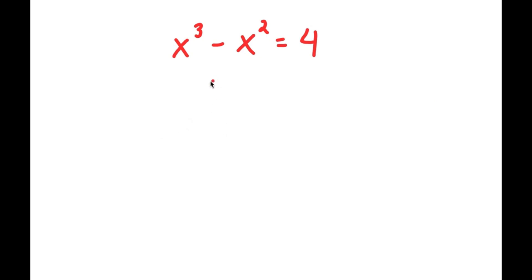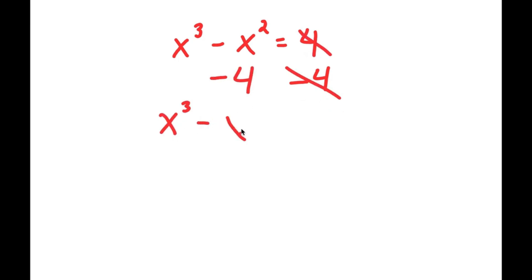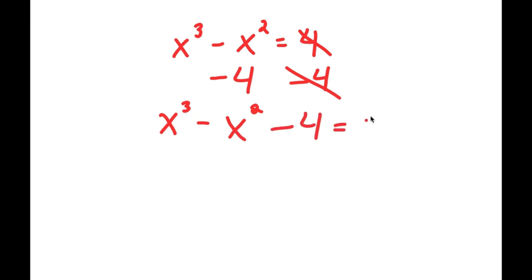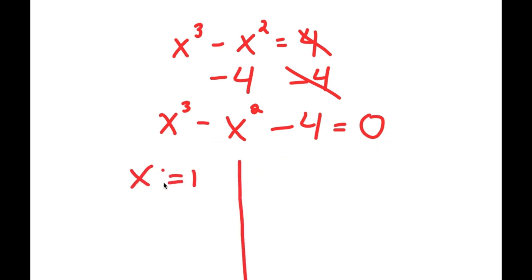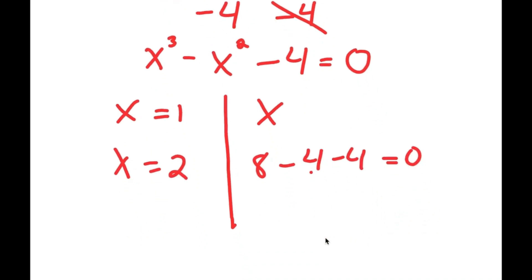In this problem, I have x to the power of 3 minus x squared is equal to 4. I'm going to start by subtracting 4 on both sides, so I get x to the power of 3 minus x squared minus 4 is equal to 0. To solve this, I need to find one solution of x and then use that to find the rest, so I'm going to plug in values of x. For x equals 1, that doesn't work. For x equals 2, I get 8 minus 4 minus 4, which is equal to 0, so x equals 2 is a solution.